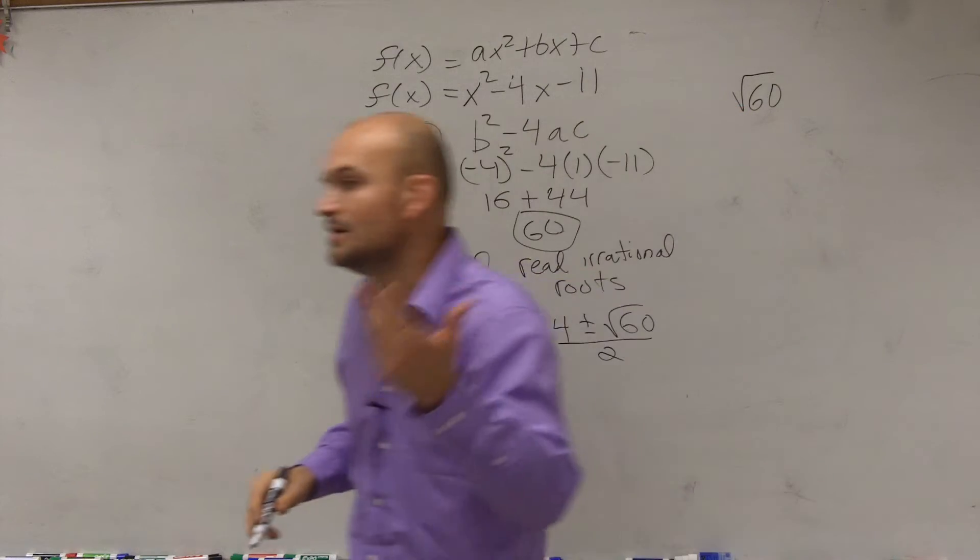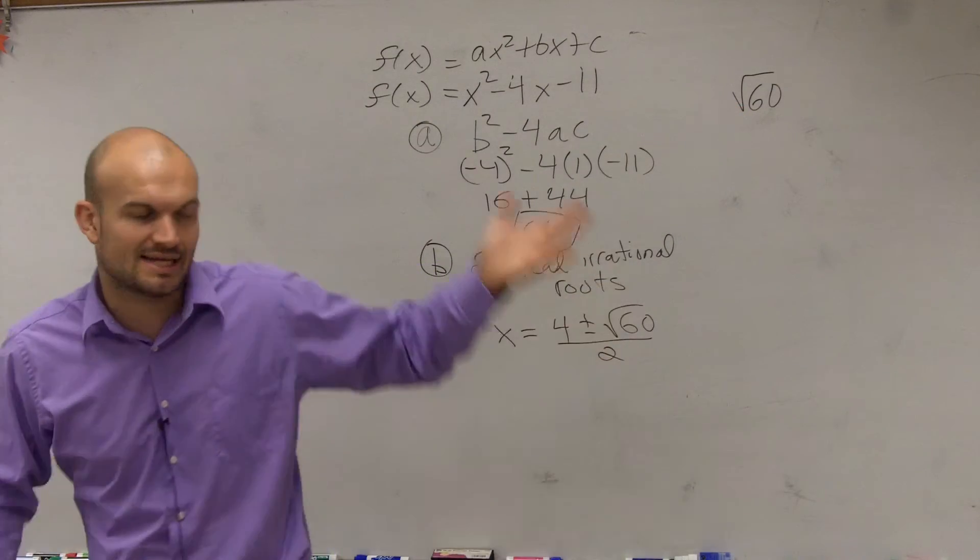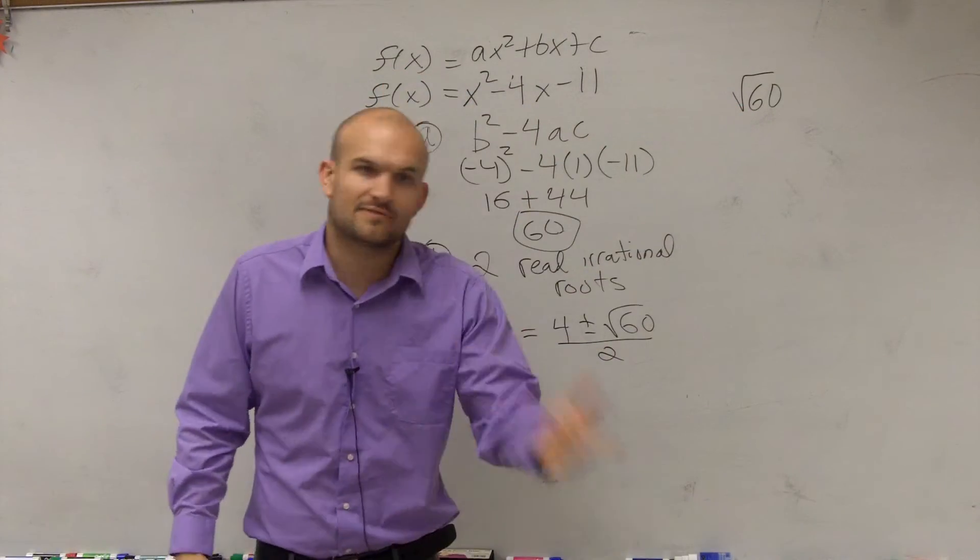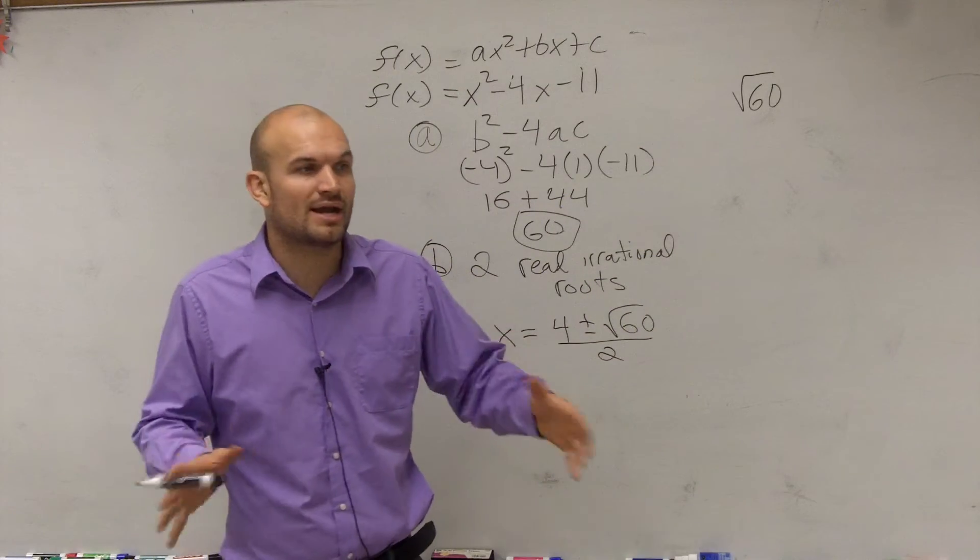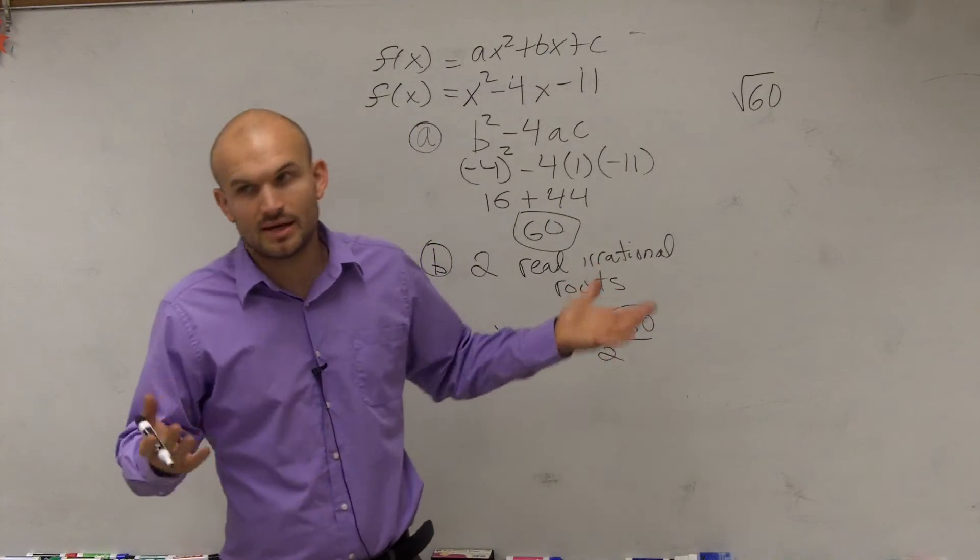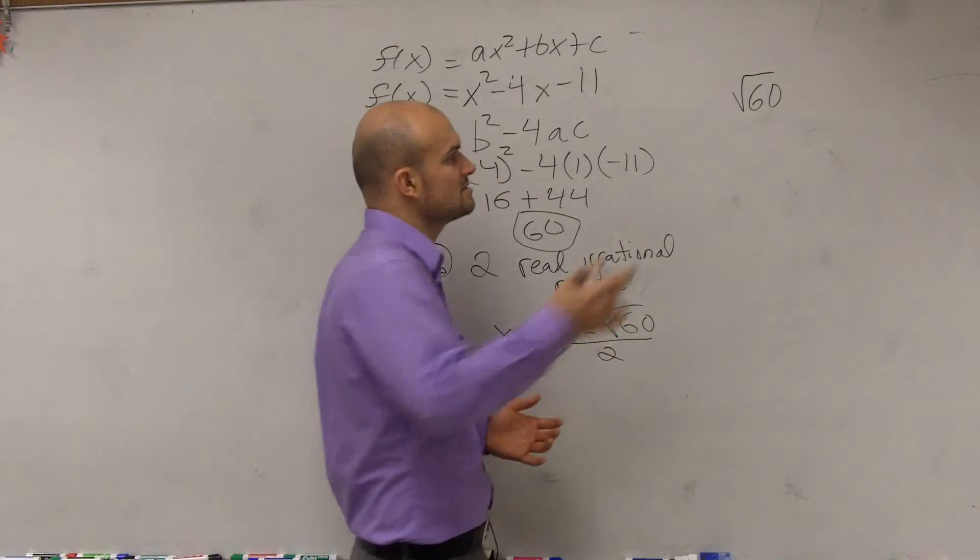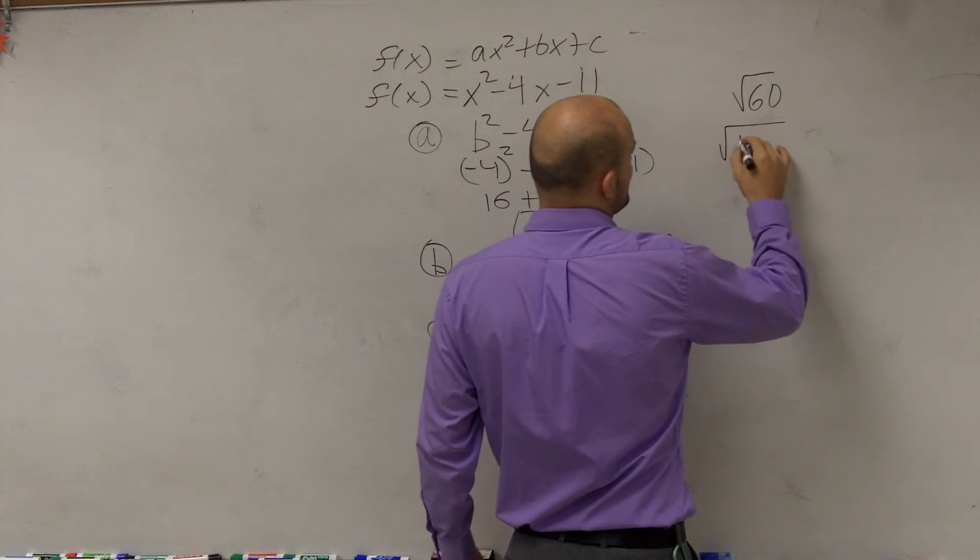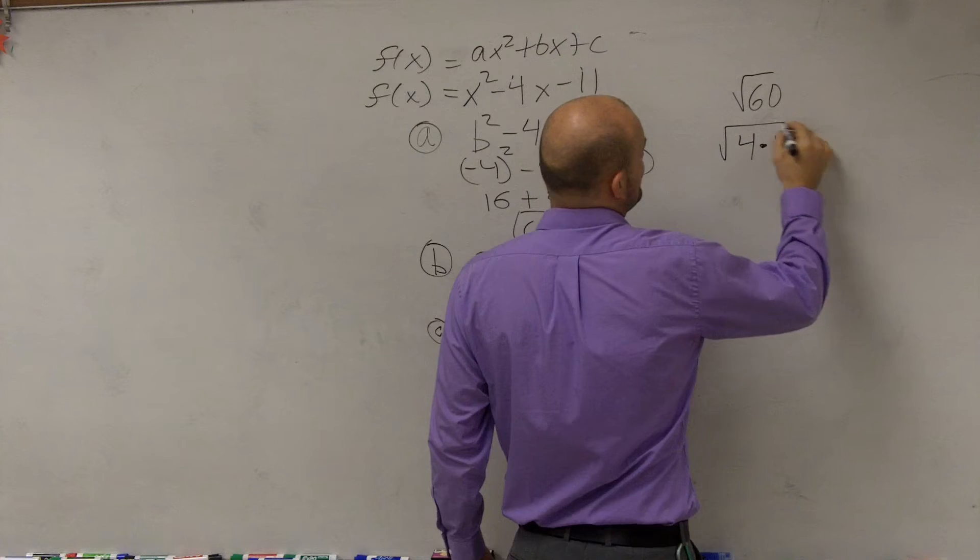You think 4, 9, 4, 9, 16, 25, 36. What do those numbers divide into 60 that we can rewrite as a product with another number? And the largest square number that goes into it is 4. So I can rewrite this as 4 times 15.